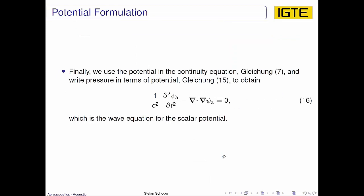Now inserting this into the equations like the continuity equation and writing the pressure in terms of the potential like equation 15, we obtain the wave equation in the scalar potential form. This will afterwards be used when we derive the perturbed convective wave equation.